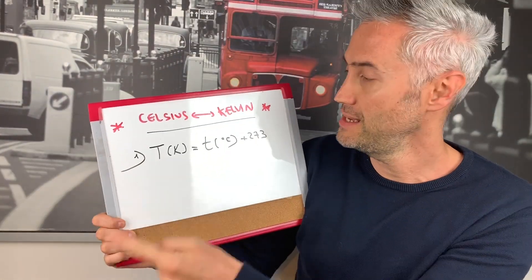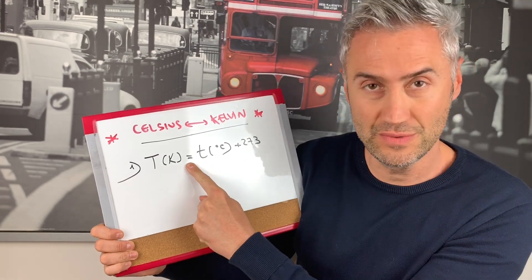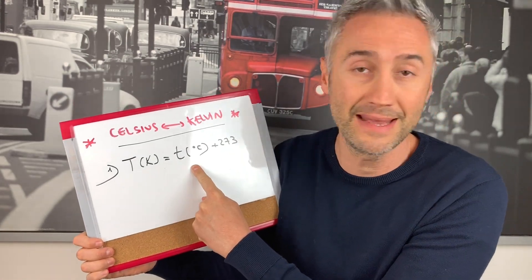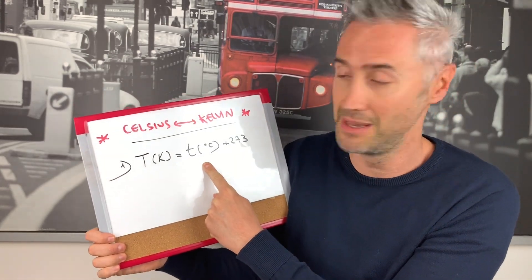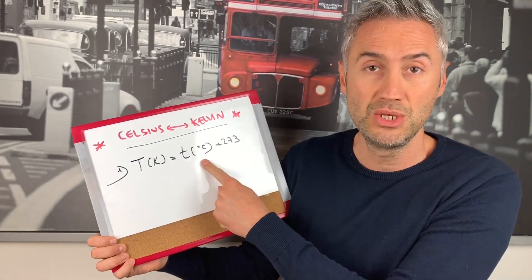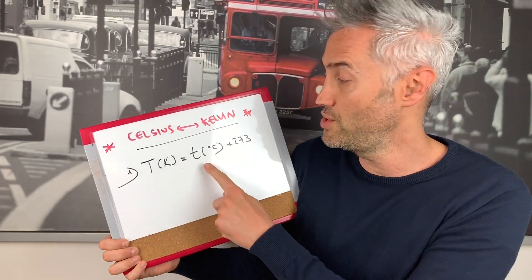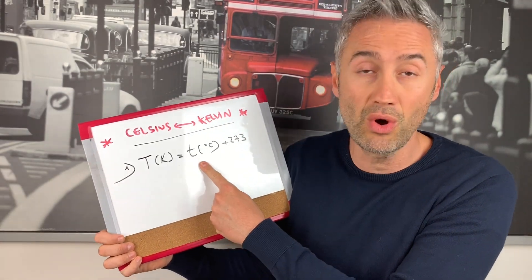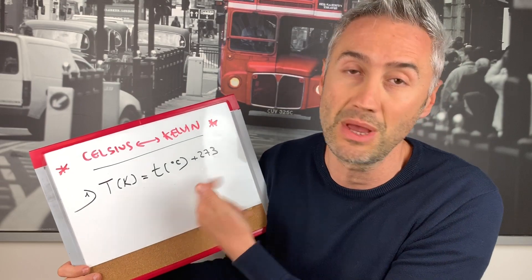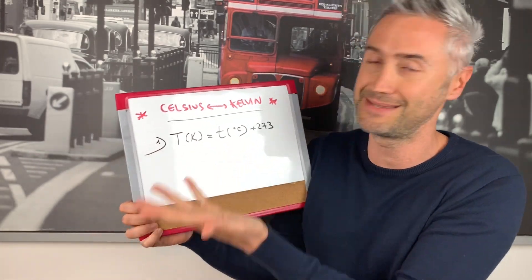Let me give you two formulas. The first: Kelvin equals whatever your degrees are in Celsius plus 273. So if you are given your temperature in Celsius, that's all you need to do.